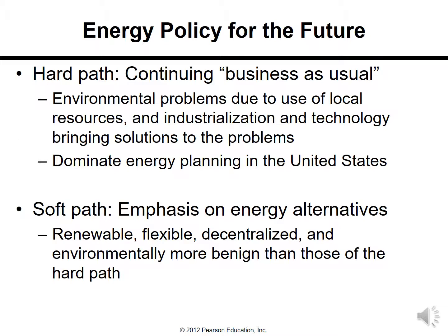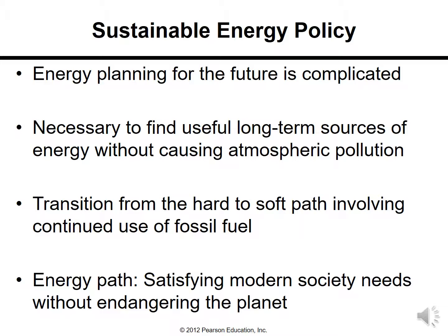Energy policy for the future involves two paths. The hard path means continuing business as usual — dealing with environmental problems through use of local resources, industrialization, and technology — and dominates current energy planning in the US. The soft path emphasizes energy alternatives: renewable, flexible, decentralized, and environmentally more benign. Sustainable energy planning for the future requires finding useful long-term energy resources without causing atmospheric pollution, transitioning from the hard to soft path while satisfying modern society's needs without endangering the planet.